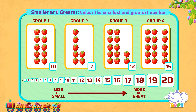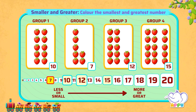Which group has the smallest number of strawberries? We see that group 2 has 7 strawberries. The number 7 is smaller than 10, 12, and 15. So, group 2 has the smallest number of strawberries.